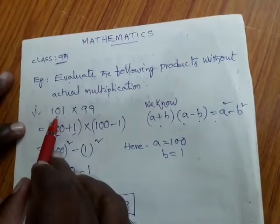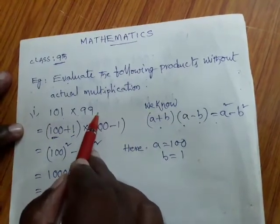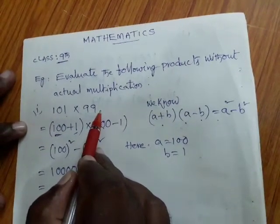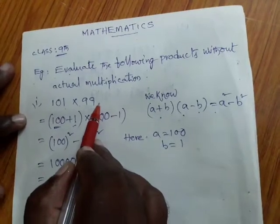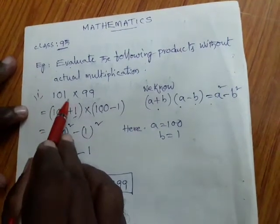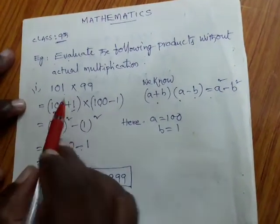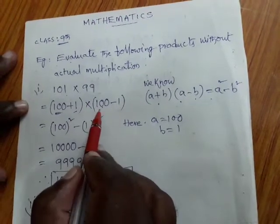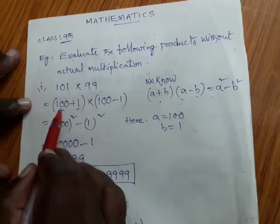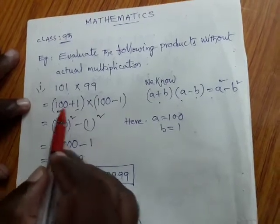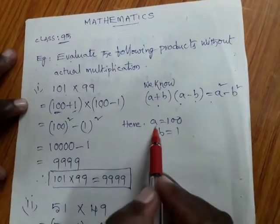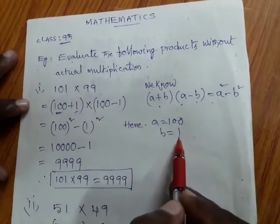Now the sum is 101 into 99. We have to do this without actual multiplication. 101 can be split into 100 plus 1. 99 can be split into 100 minus 1. Here let 100 is equal to A and 1 is equal to B. That means A equals 100 and B equals 1.